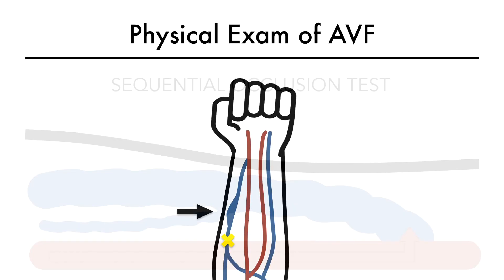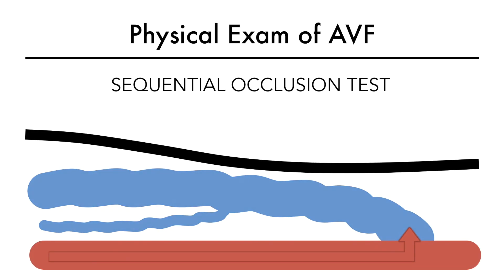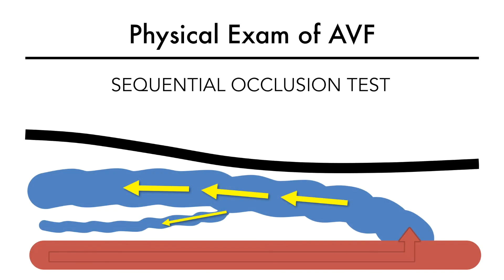The third bedside test is the sequential occlusion test, used to look for accessory veins. Accessory veins are veins that shoot off of the main fistula. If large enough — typically more than 25% in caliber of the main draining vein — they tend to compete with the fistula for blood. This can cause lower flows through the fistula, poor vein maturation, and early fistula failure. This is a radiocephalic fistula with a prominent accessory vein shooting off of the cephalic vein. Oftentimes the accessory vein is visible on inspection; if it isn't, it can be detected using the sequential occlusion test.